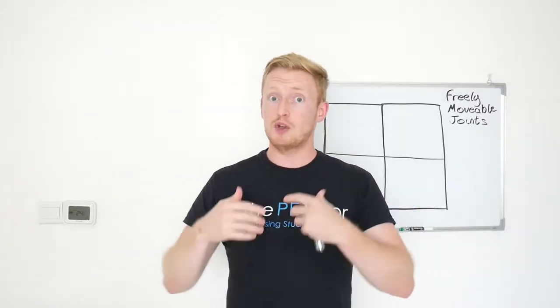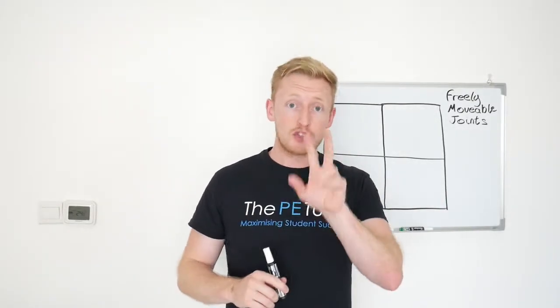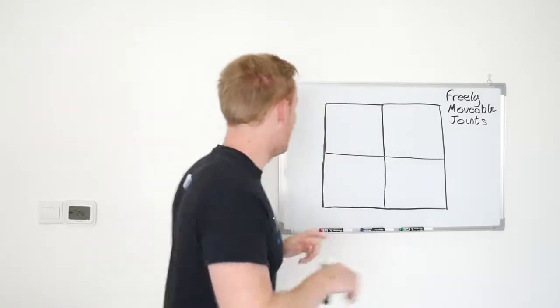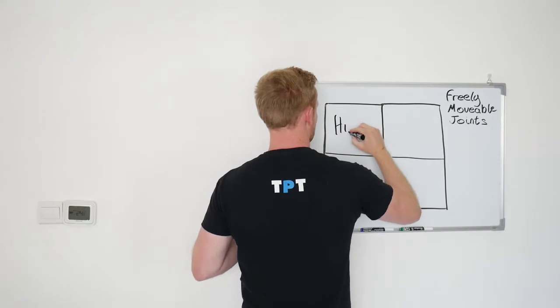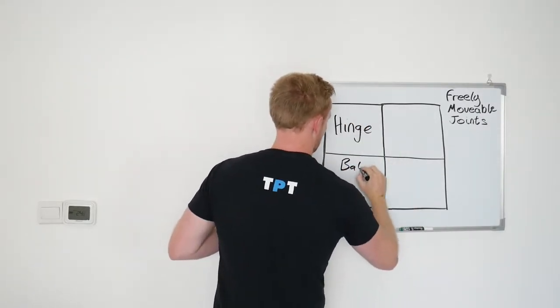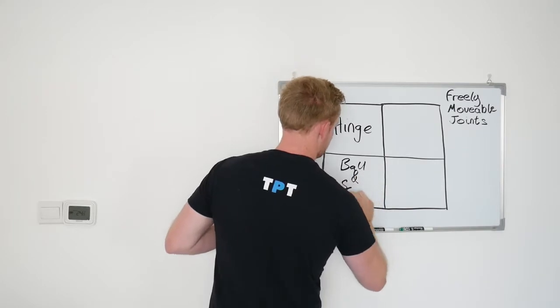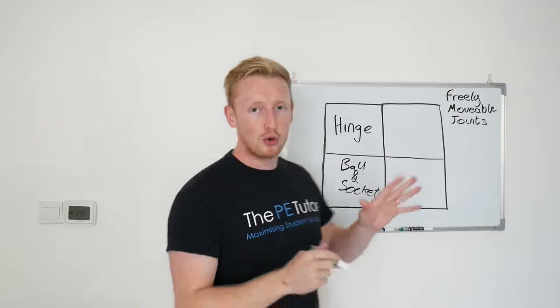The third type of joint which is what you need to know most about come your GCSE exam are freely movable joints and there are two different types that you need to know: hinge joints and ball and socket joints.